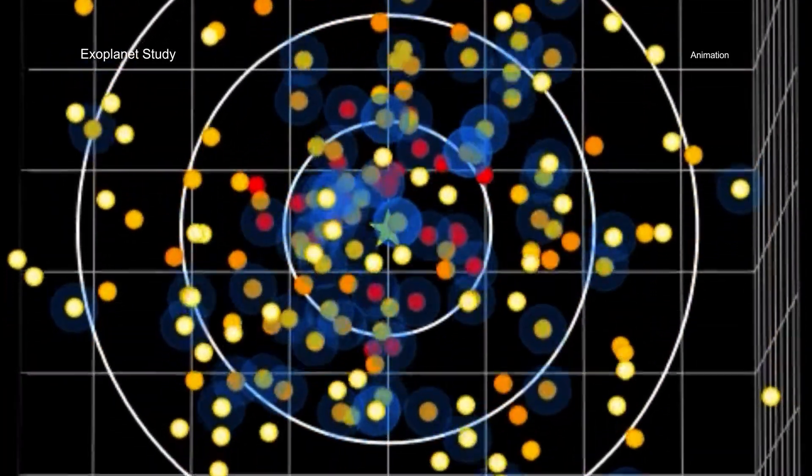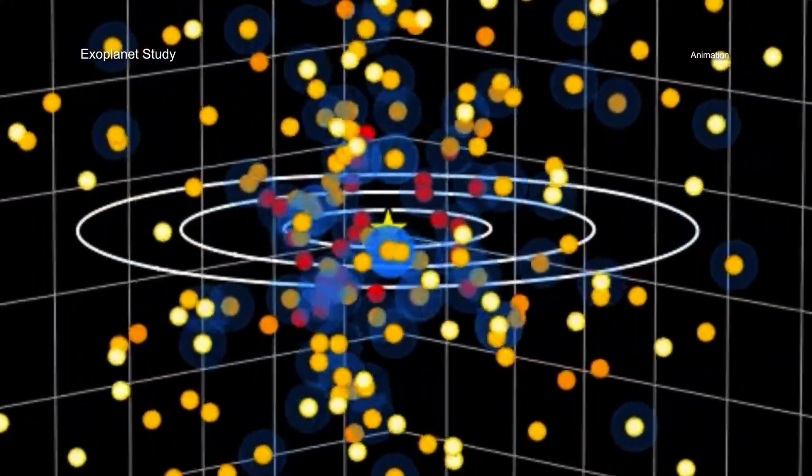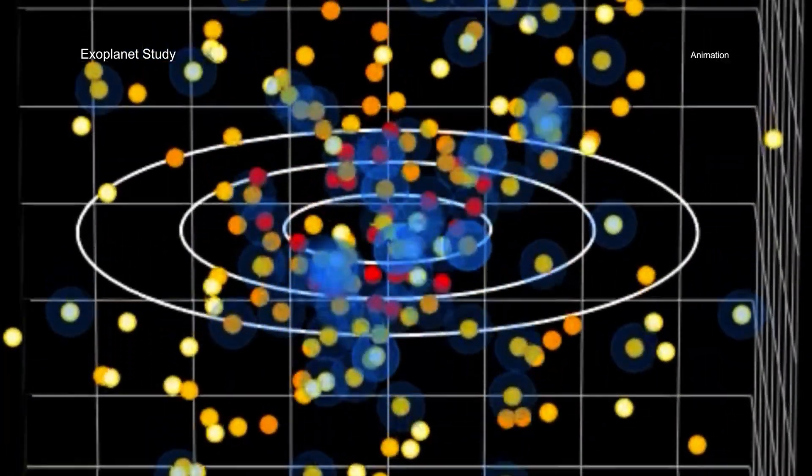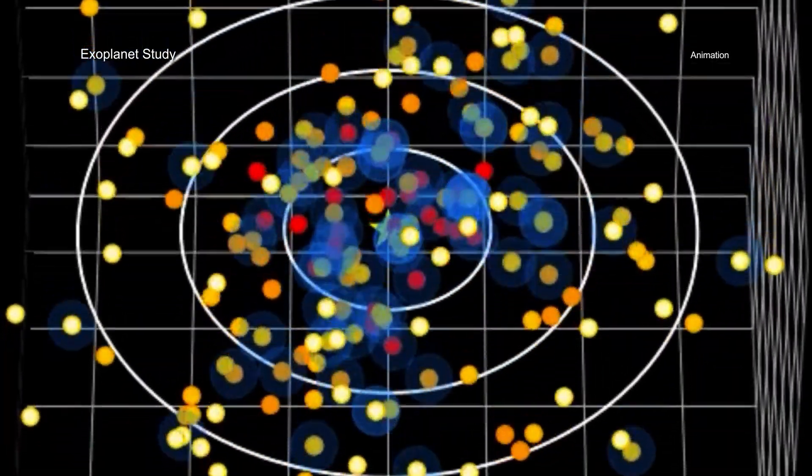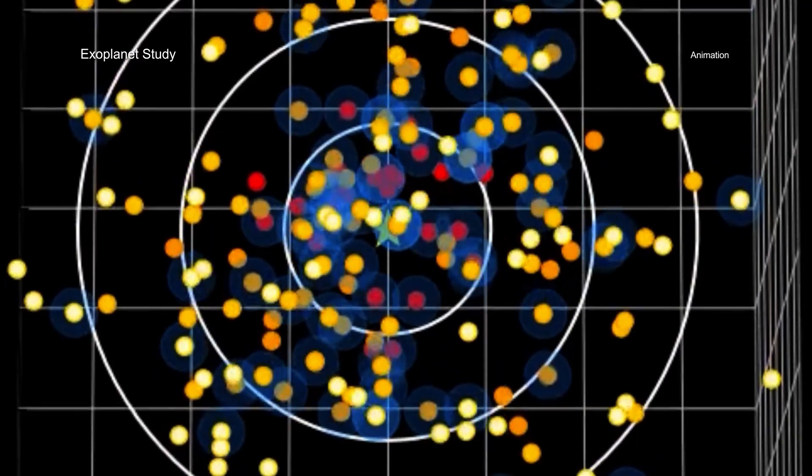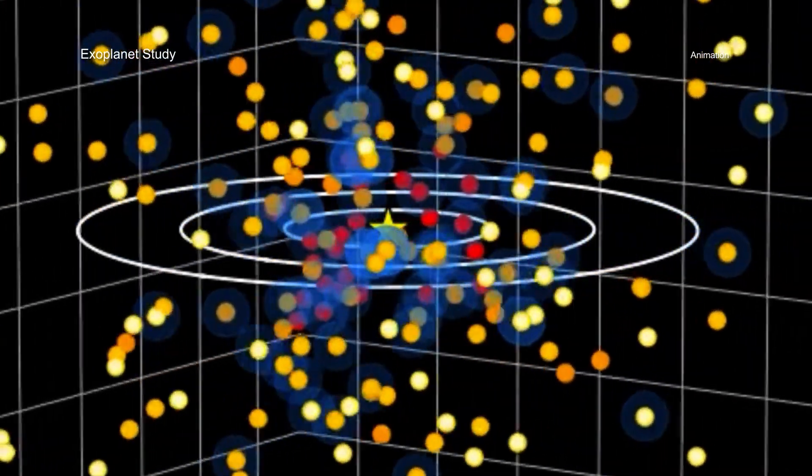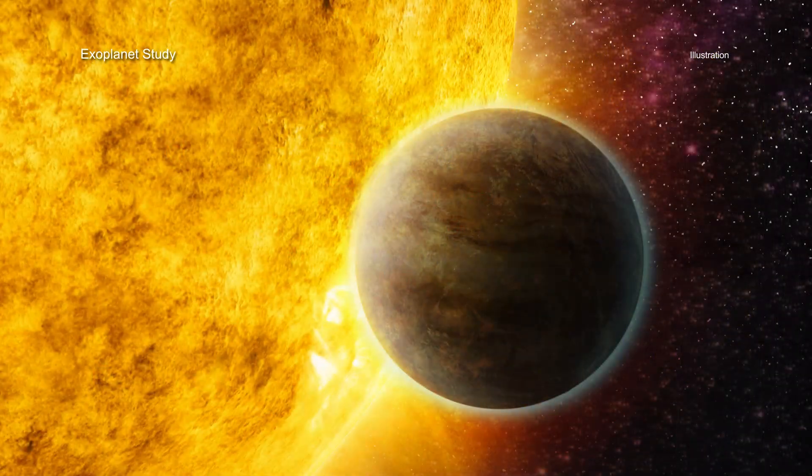Observing time on the next generation of telescopes will be precious and extremely difficult to obtain. These x-ray data are helping to refine and prioritize the list of targets and may allow the first image of a planet like the Earth to be obtained more quickly.